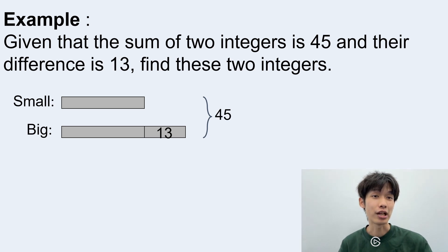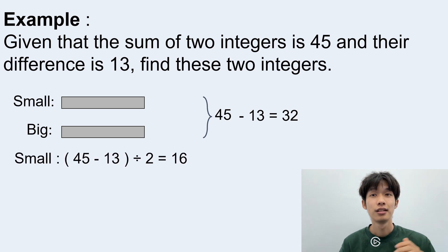If we are trying to find what's the small number, what can we do here? Someone might say that we can remove the different part from the bigger number. So in that case, let's see. We have two identical small numbers and their total equals to 32. And what happens if we are trying to find the small number? We can just minus the 32 by 2 and give us 16.